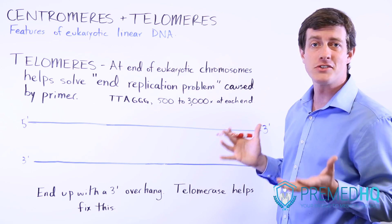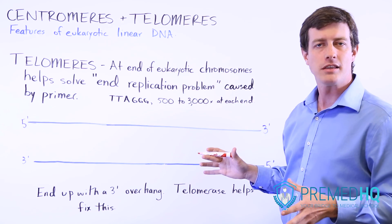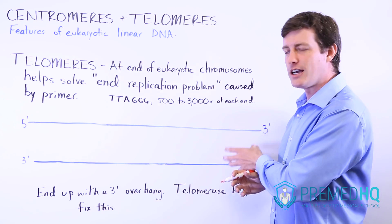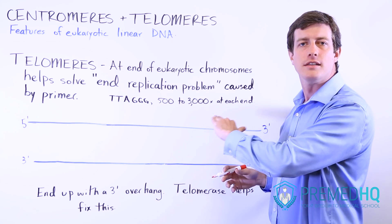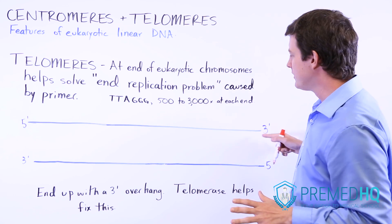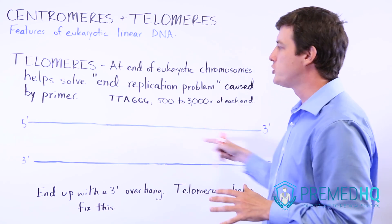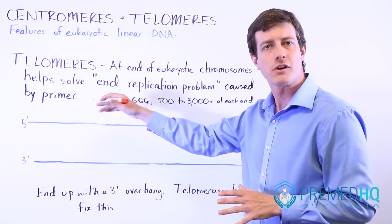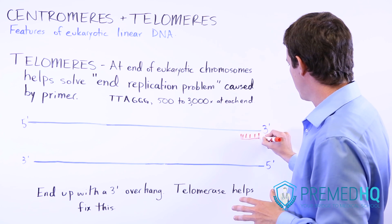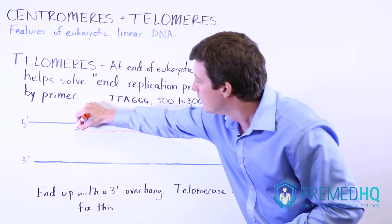The reason that telomeres exist is because they help solve what is known as the end replication problem, caused by the primer. In DNA replication, first you need to lay down an RNA primer before the DNA polymerase can attach. The general motif for DNA is that it reads up and it writes down, reading from the three prime end to the five prime end of the parent strand, and then the polymerase comes in and replicates the rest with DNA.